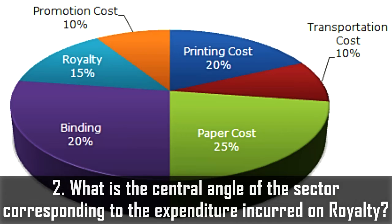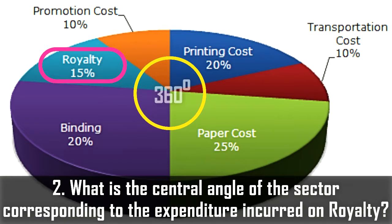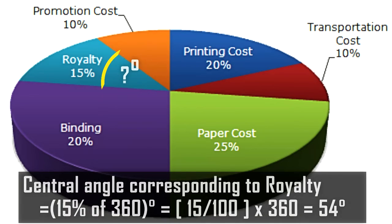Question two asks: what is the central angle of the sector corresponding to the expenditure incurred on royalty? The pie chart shows that royalty equals 15 percent. Since the pie chart covers a total of 360 degrees, the central angle corresponding to royalty is 15 percent of 360 degrees, which equals 54 degrees.